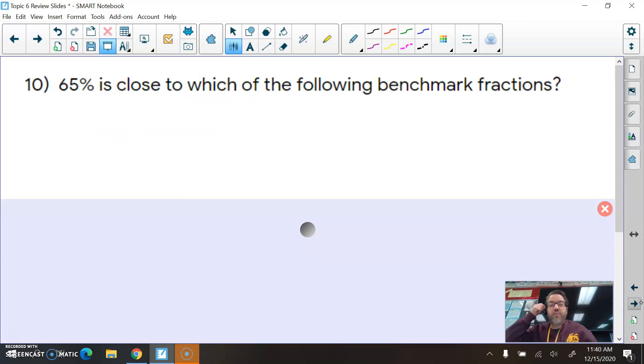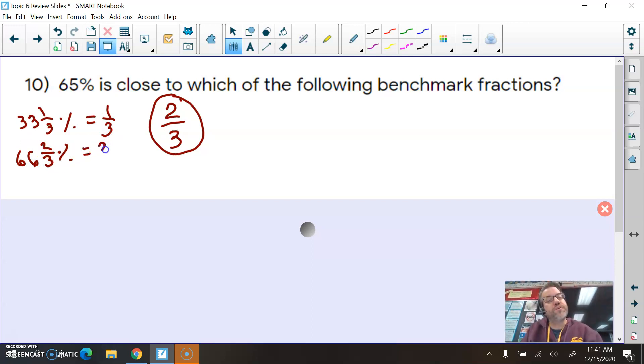Number 10. Now we're talking about estimation and benchmark fractions. 65% is close to which of the following benchmark fractions? When I look at 65%, that's really close to two-thirds. That's our benchmark fraction that we would use if we saw 65%. See, 33 and a third percent is one-third. 66 and two-thirds percent is two-thirds. These are ones that you need to memorize, the thirds. And see, by memorizing these, I recognize, hey, 65% is really close to this two-thirds value of 66 and two-thirds percent. So, yeah, it would be two-thirds.